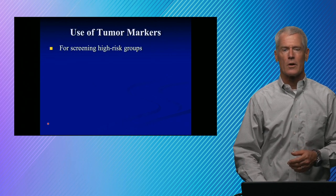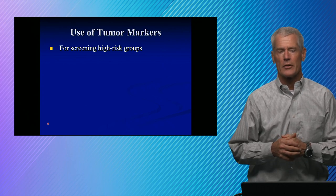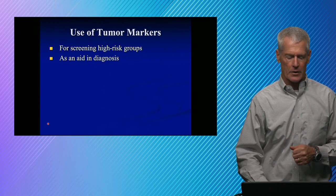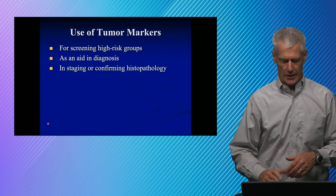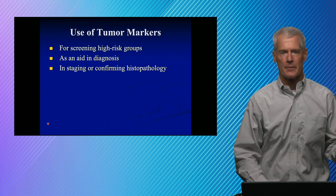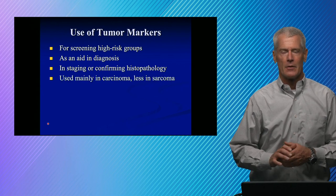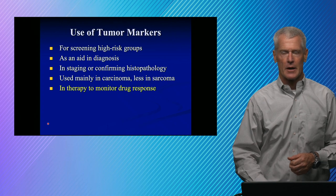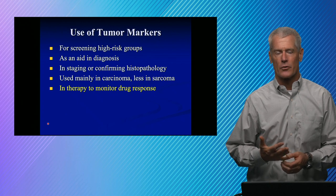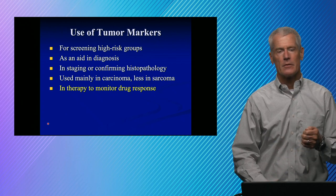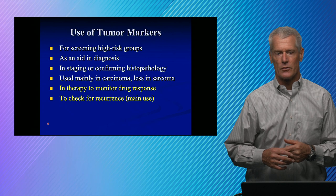So what do we use it for? It's used for screening high-risk groups particularly, and in fact really the only one that's approved for this is PSA for screening high-risk groups. It's also used as an aid in diagnosis; if they're doing it on tissue they can do it to stage or confirm histopathology, so helpful in identifying where the tumor is. Generally these are carcinoma markers, less so in sarcomas. It's used to monitor response — that's a primary use of tumor markers — checking response to therapy and looking for recurrence. Those are really the two primary uses of tumor markers.